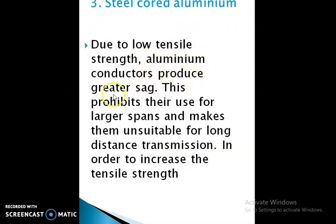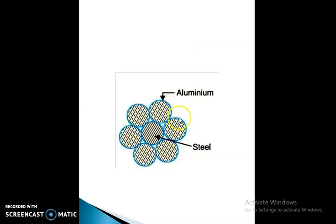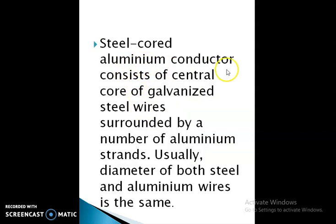The third type is steel-cored aluminum (ACSR - Aluminum Conductor Steel Reinforced). Due to low tensile strength, aluminum conductors produce greater sag, which prohibits their use for larger spans and makes them unsuitable for long-distance transmission. To increase tensile strength, the aluminum conductor is reinforced with a core of galvanized steel wire. The steel-cored aluminum conductor consists of a central core of galvanized steel wires surrounded by a number of aluminum strands. Usually the diameter of both steel and aluminum wires is the same.